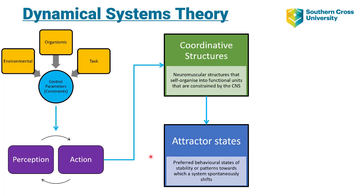The first key concept is non-linear dynamics. When we think about our transition from one behavioural state to another — for instance walking into running — that is a non-linear change in behavioural state. We are changing our preferred behaviour from one pattern to another, and that is a spontaneous shift largely controlled by some sort of constraint.